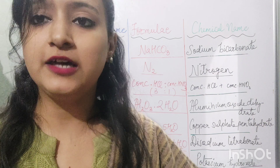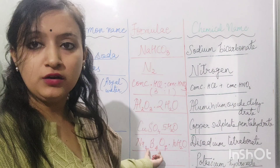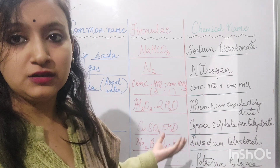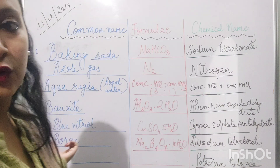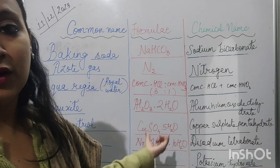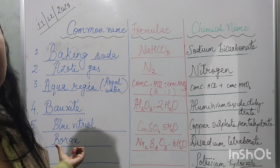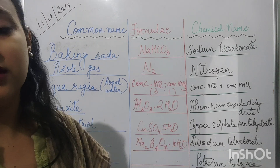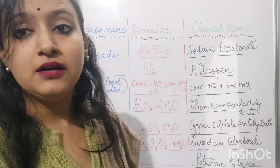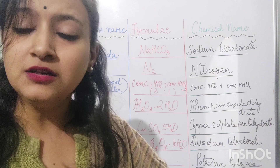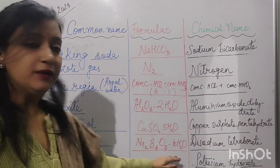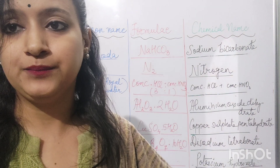Why is this compound named borax? You can see it is a boron–sodium salt. Due to the presence of boron atoms chemically combined with sodium atoms, it gets the name borax. Borax is a sodium boron compound — a sodium salt containing boron atoms. It is a hydrated salt with 10 molecules of water chemically combined per molecule of sodium borate.